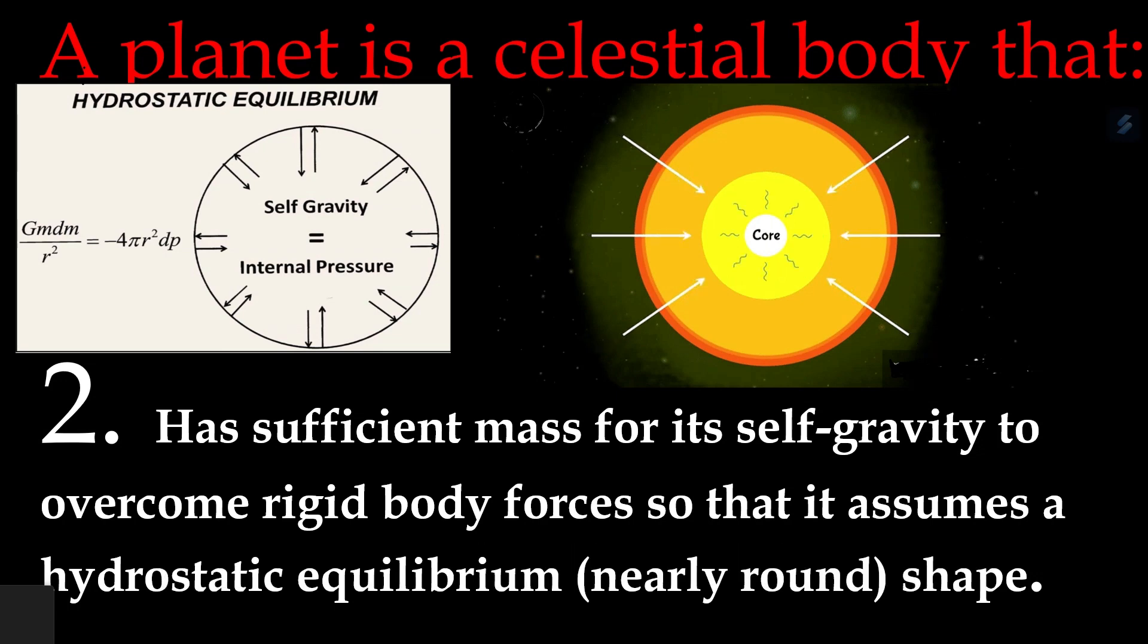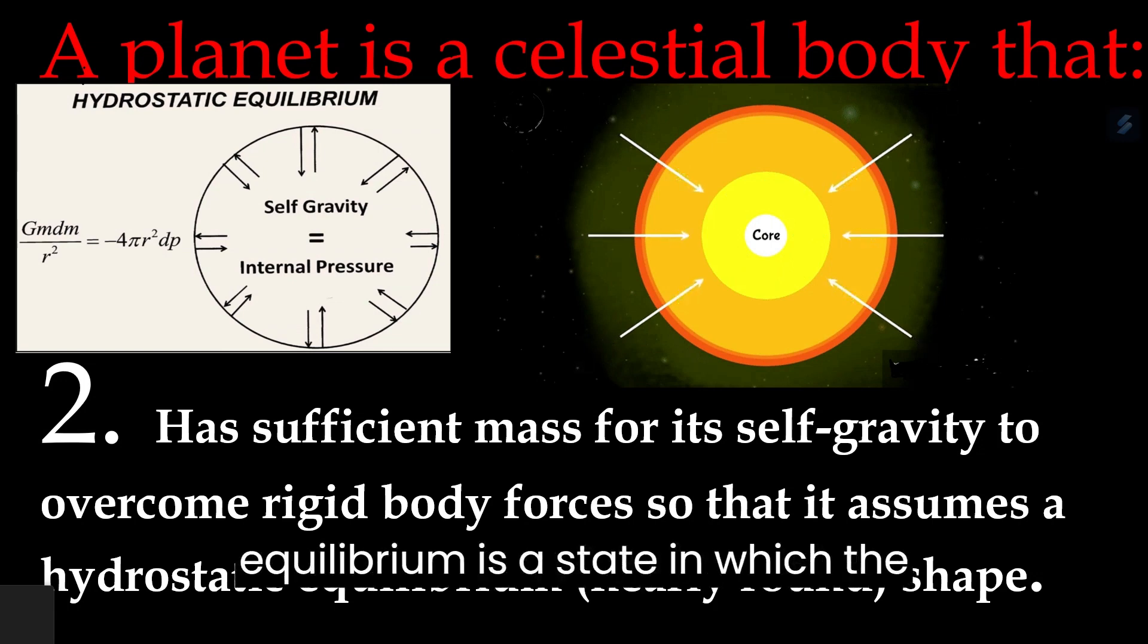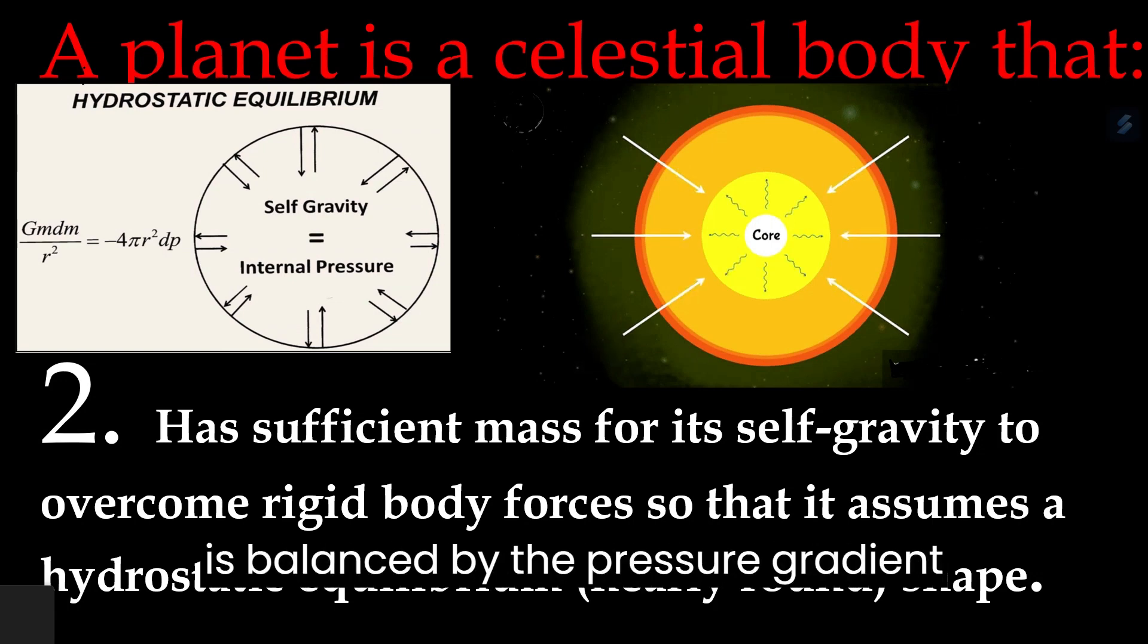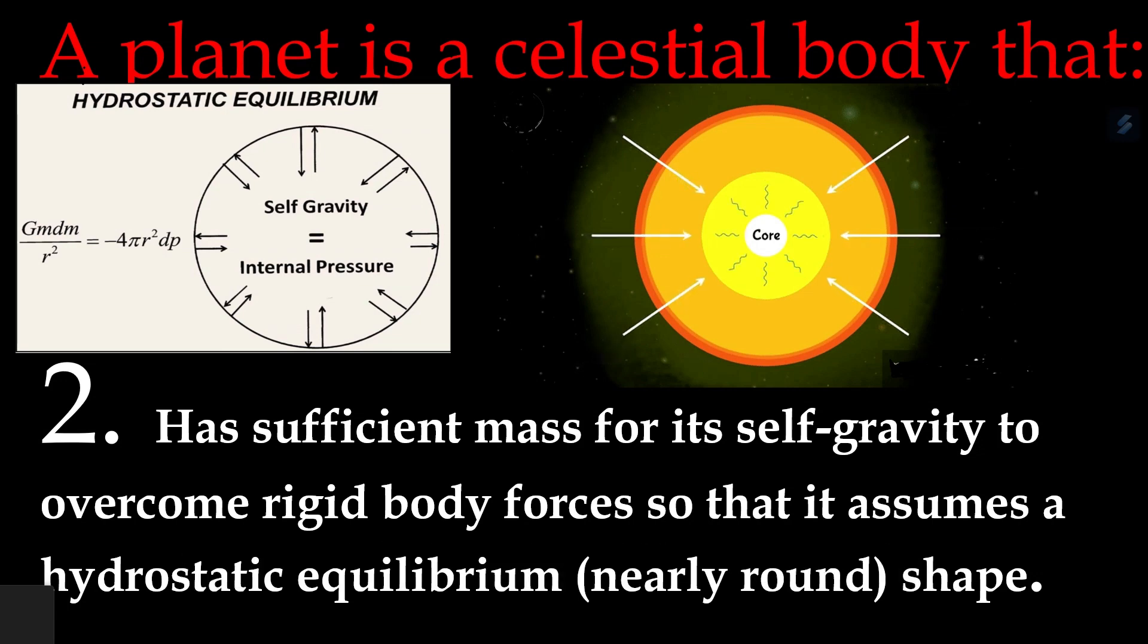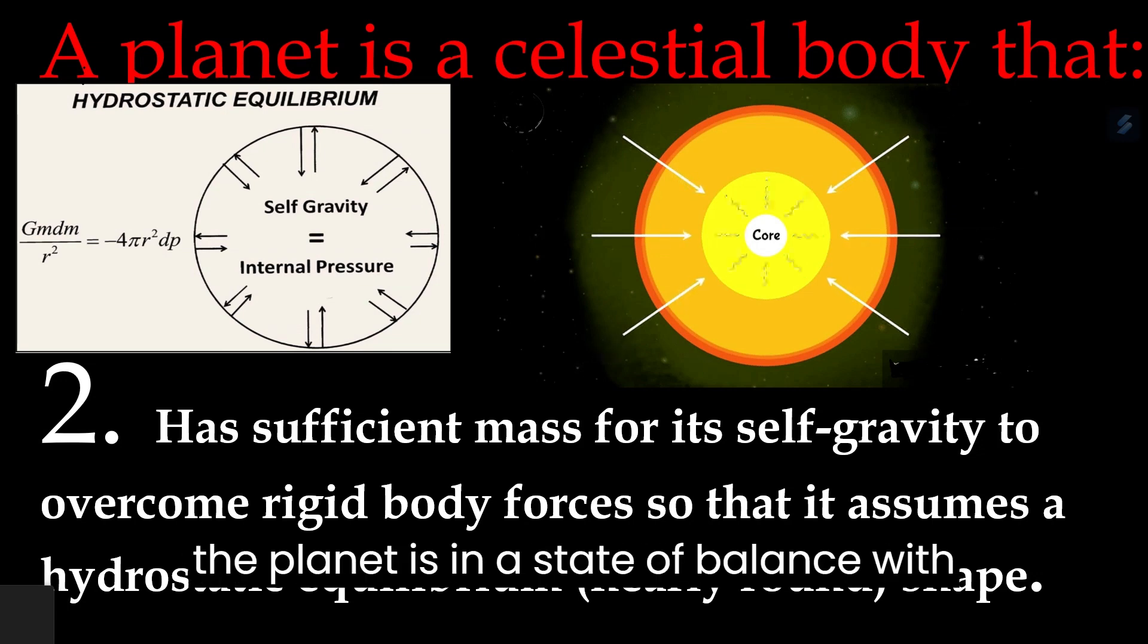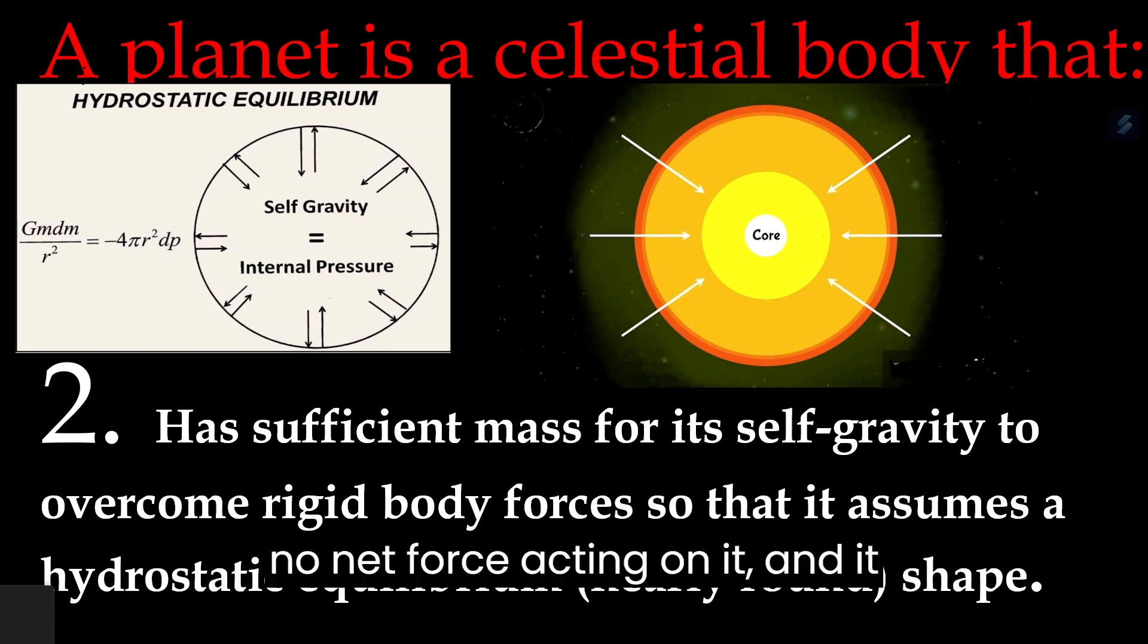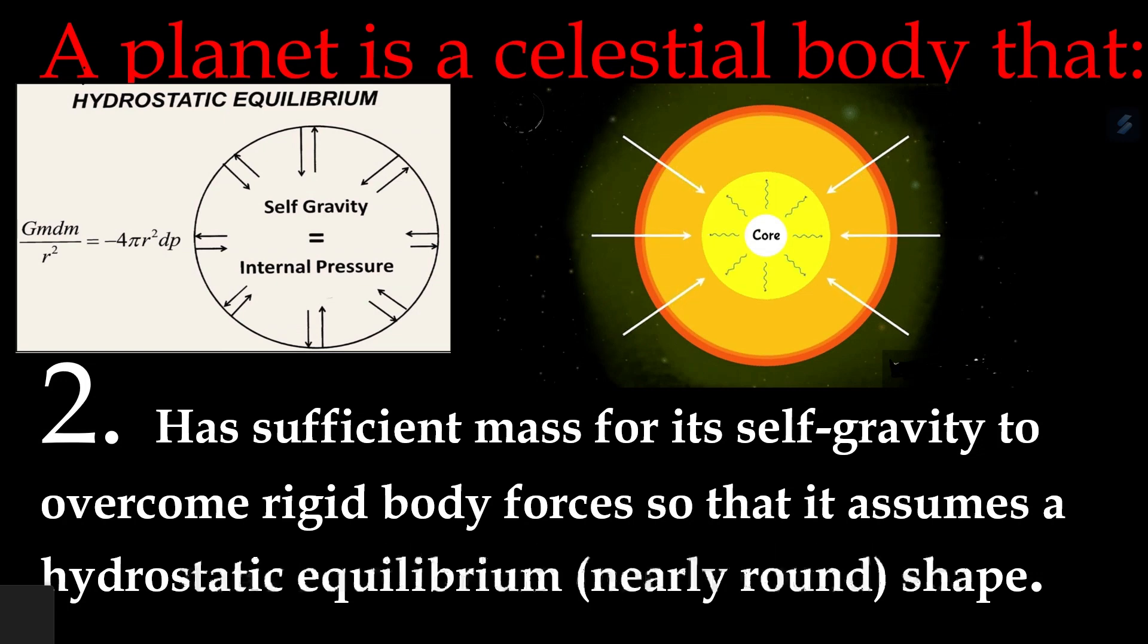Hydrostatic equilibrium is a state in which the gravitational force acting on a planet is balanced by the pressure gradient force within the planet. This means that the planet is in a state of balance with no net force acting on it, and it maintains a roughly spherical shape.